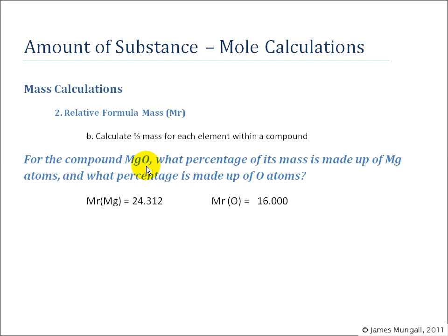Well, it is 50-50 in terms of the number of atoms, but not in terms of the mass because these atoms have got different masses. So what we're going to need to do is work out the relative formula mass of MgO. So MR of MgO is add these two numbers together and we get 40.312.